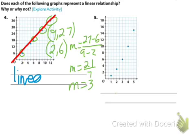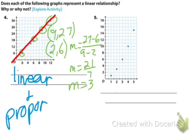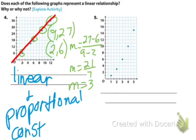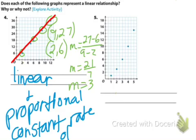So this is linear and proportional, and it has a constant rate of change.